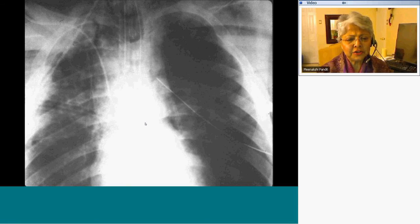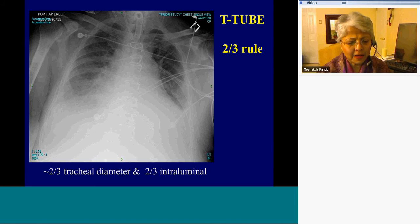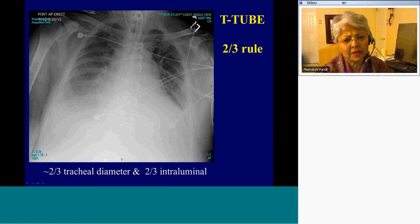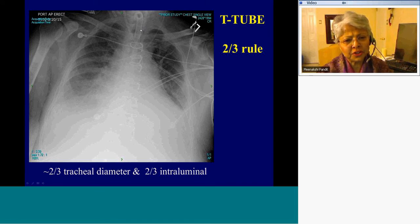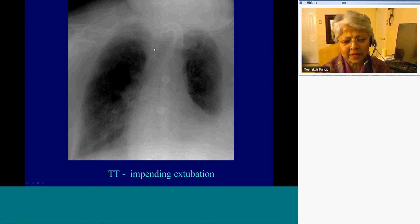This is a tracheal tube where the retention cuff is over-distended — this will eventually lead to fracture or tracheomalacia. For the tracheostomy tube, remember the two-thirds rule: it should be two-thirds intraluminal — two-thirds of the tube parallel to the tracheal air column with one-third sticking out — and it should be two-thirds the tracheal diameter. The tracheostomy tube shown here is dangling, which is impending extubation requiring an emergent phone call.